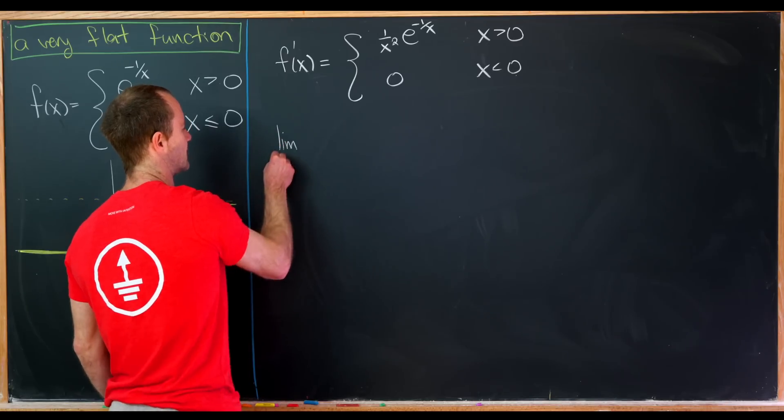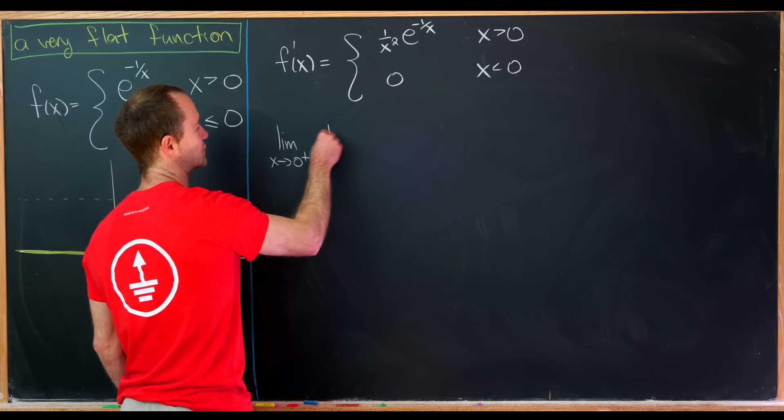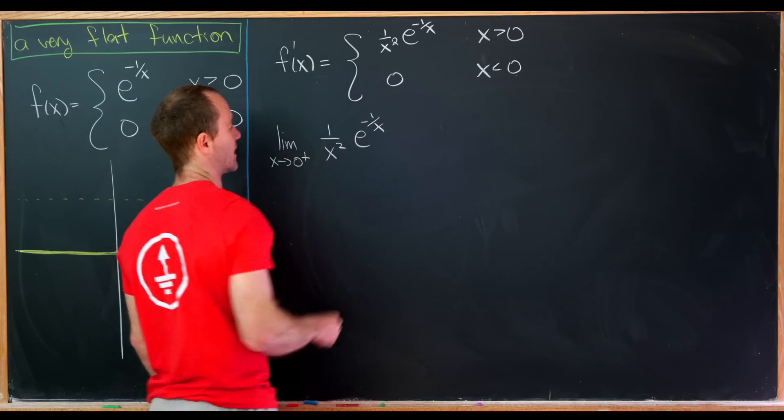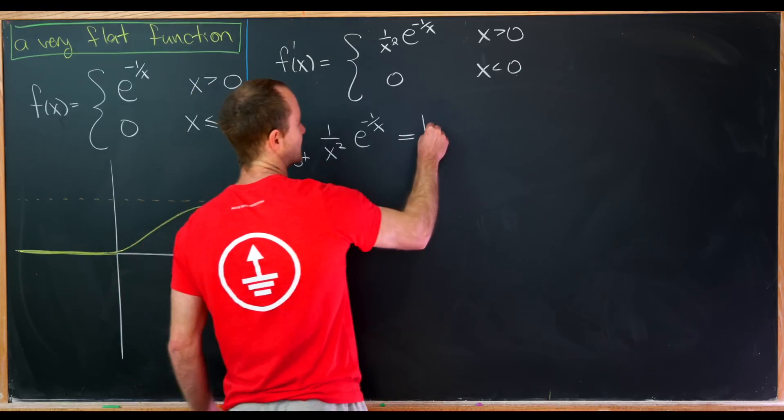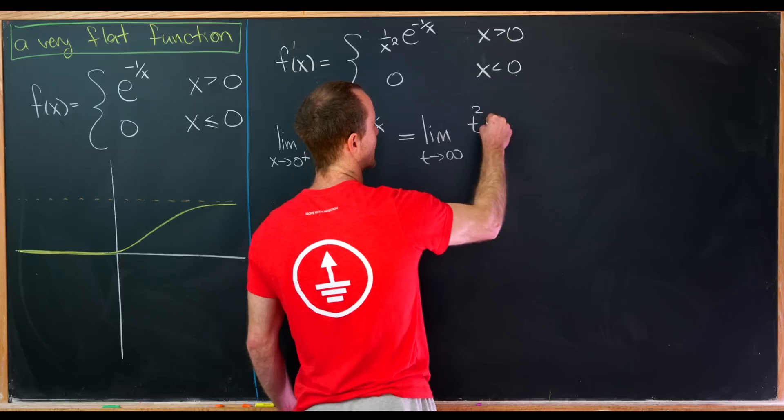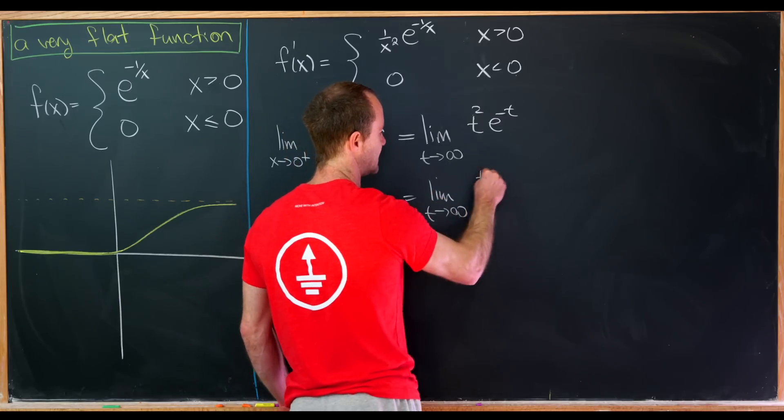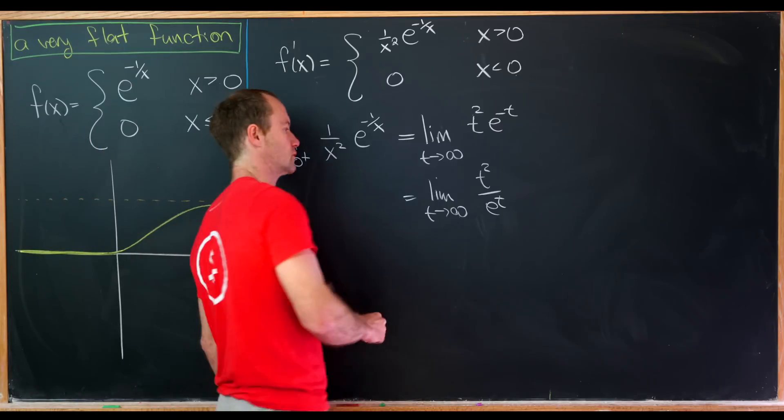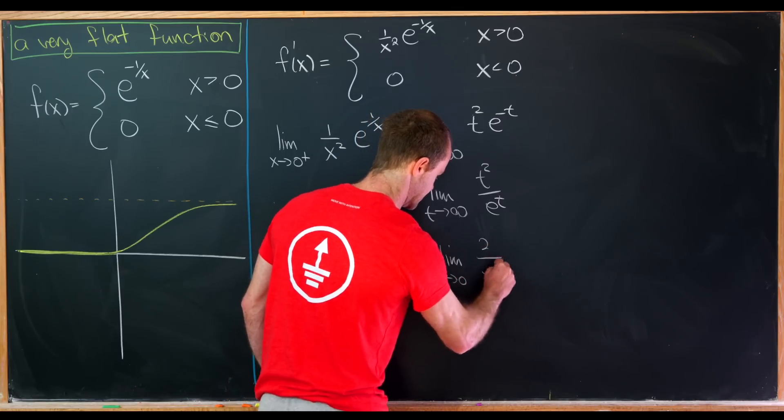So like I said, we're going to look at the limit as x goes to zero from above of f prime of x, which will be one over x squared times e to the minus one over x. So let's do that same substitution, that t substitution, and that'll leave us with the limit as t goes to infinity of t squared times e to the minus t, which is equal to the limit as t goes to infinity of t squared over e to the t. And now we can apply L'Hopital's rule twice if we wanted to, and that'll give us the limit as t goes to infinity of 2 over e to the t.